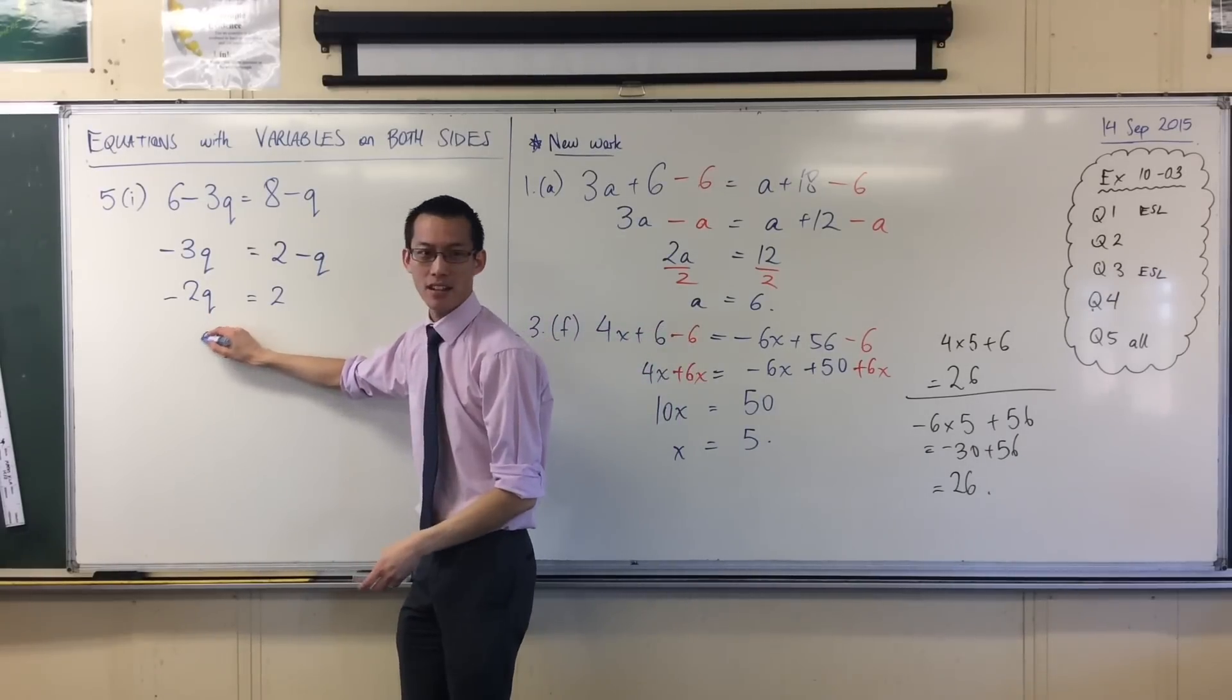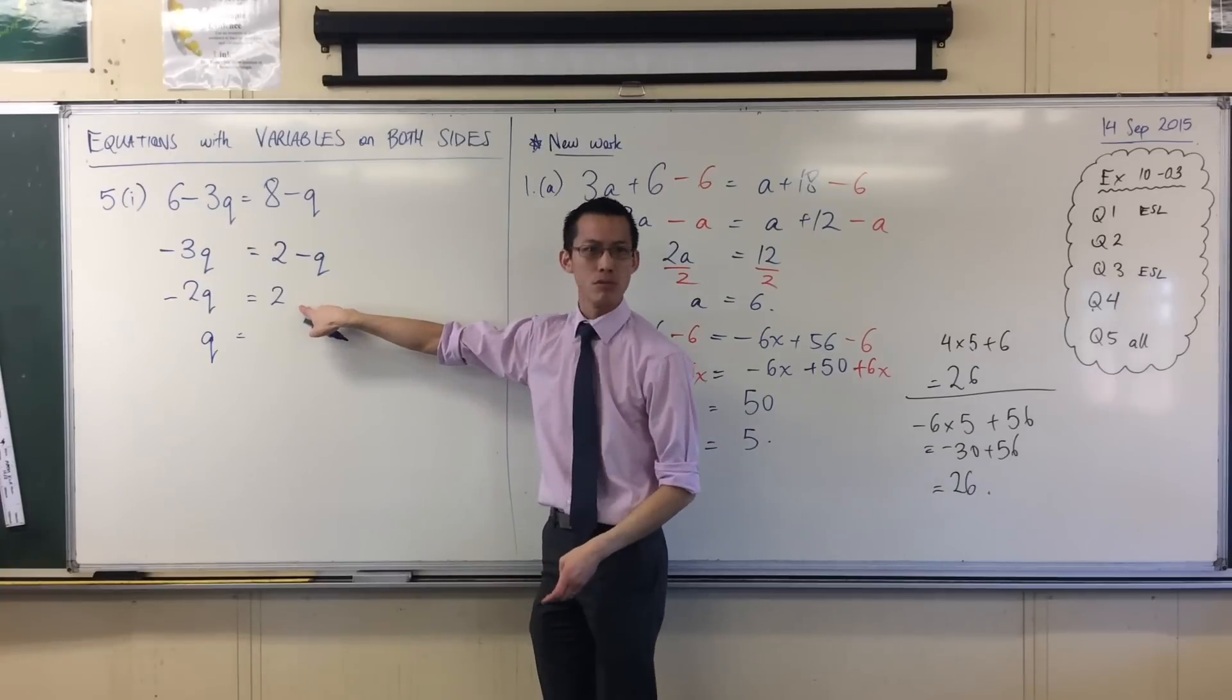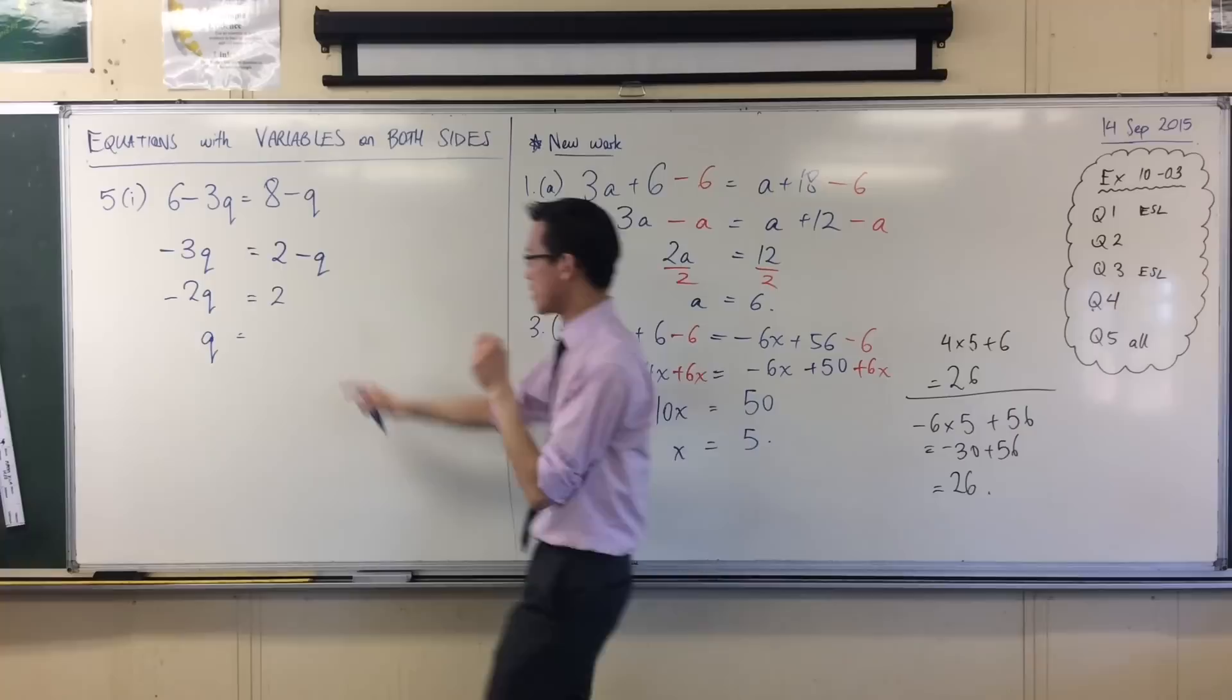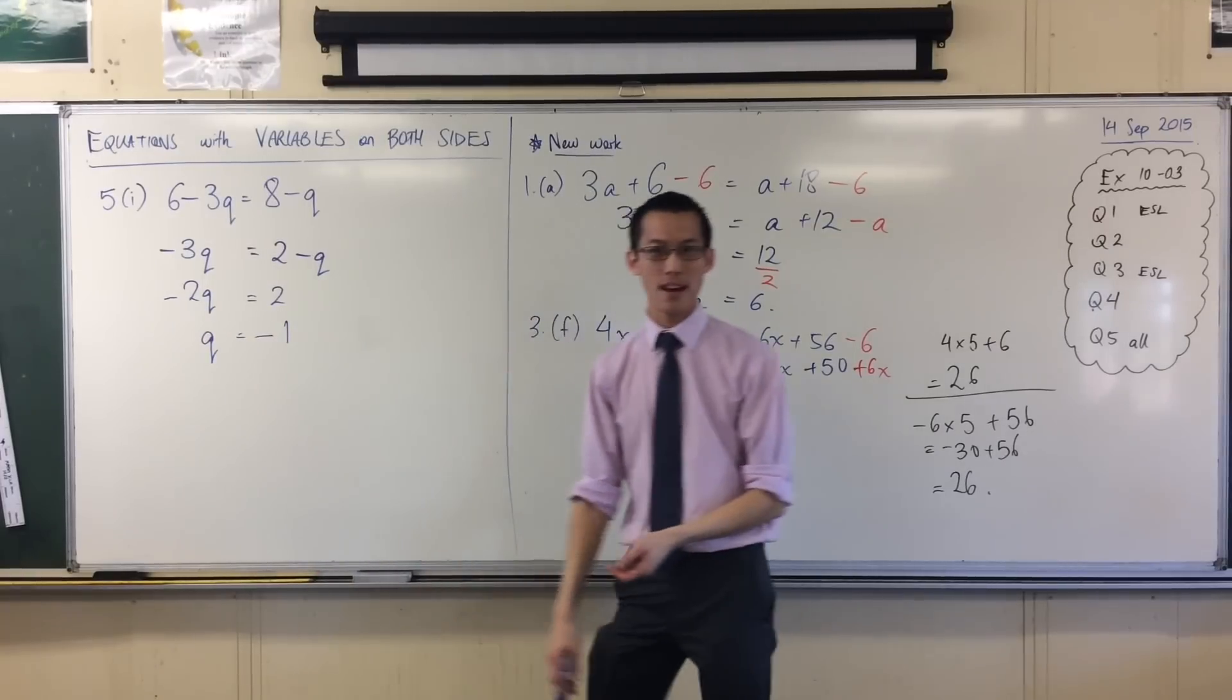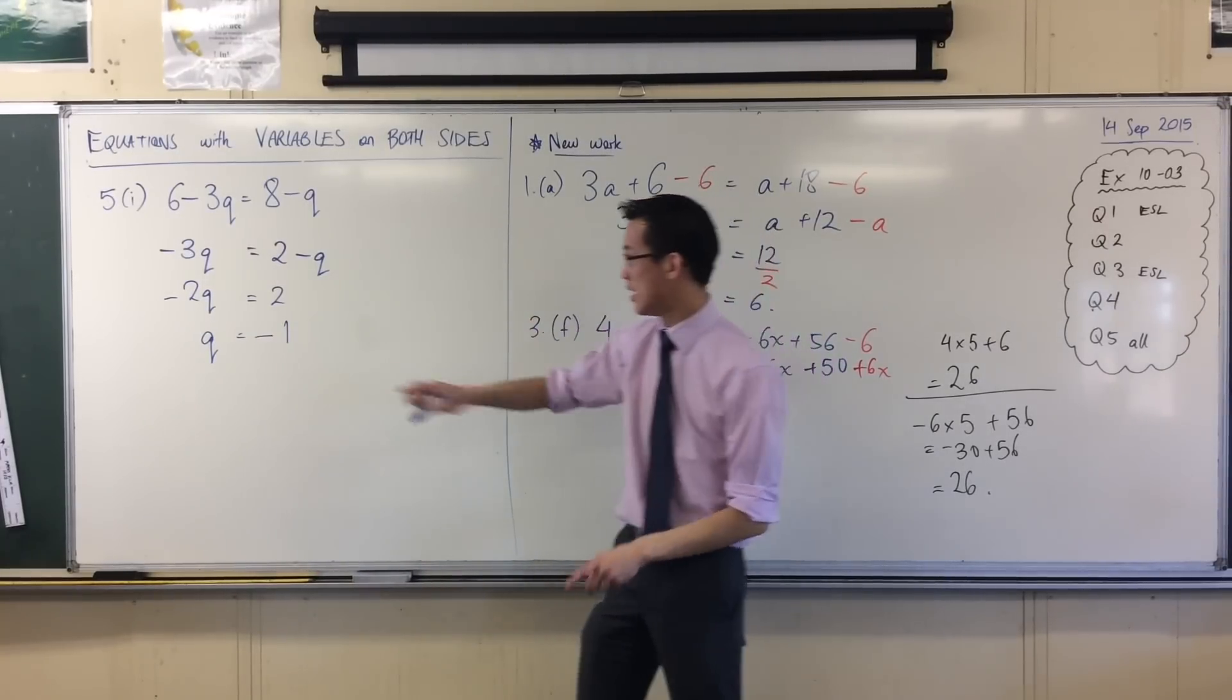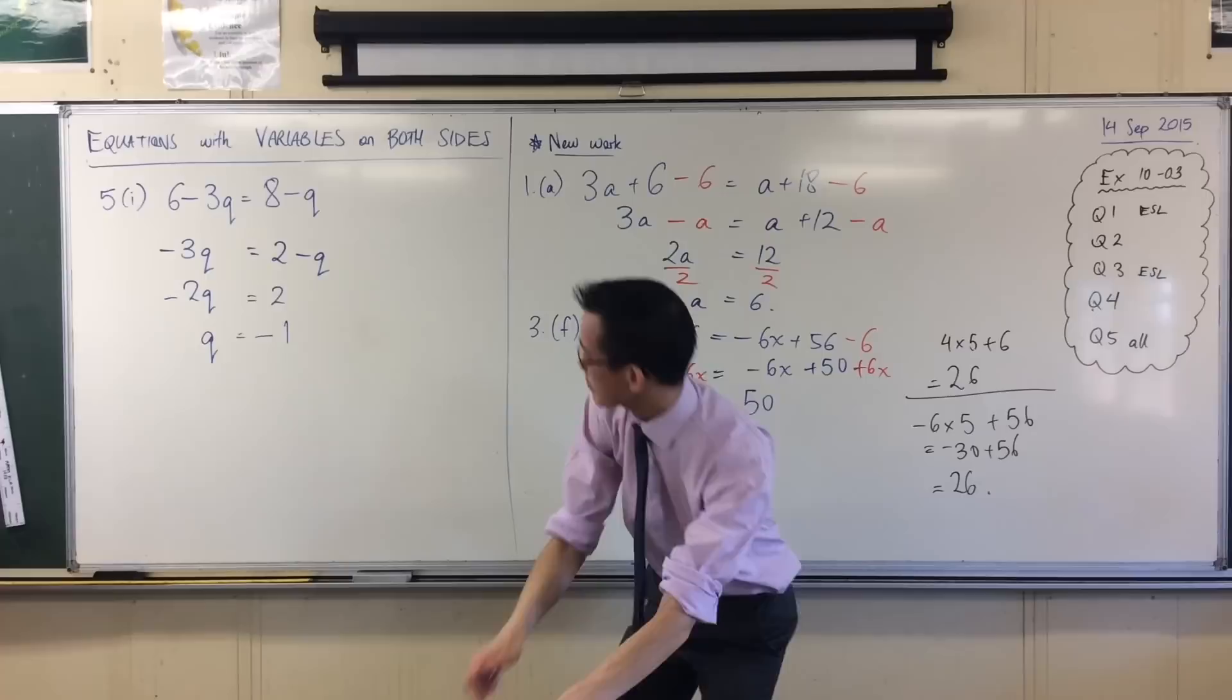On the left-hand side, that'll leave me just with Q. When I divide 2 by negative 2, the 2s will give me just 1. But there's a negative in there. So there's going to be a minus 1. Now, I can test this out. Let's just quickly test this guy out. Up here.